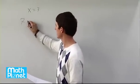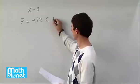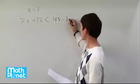The inequality says 7 times x plus 12 is less than 45 minus 3 times x.